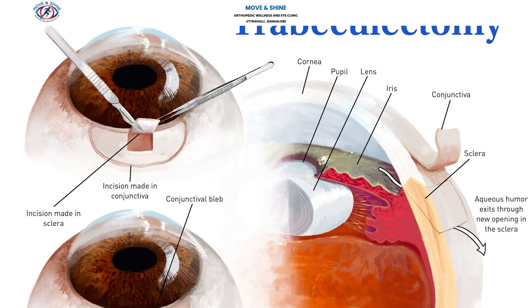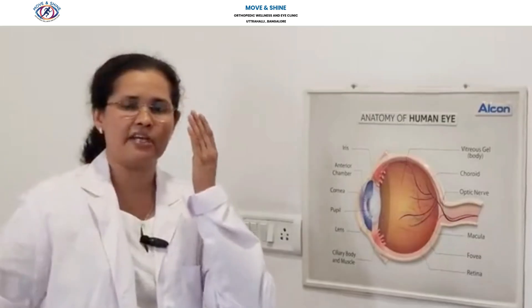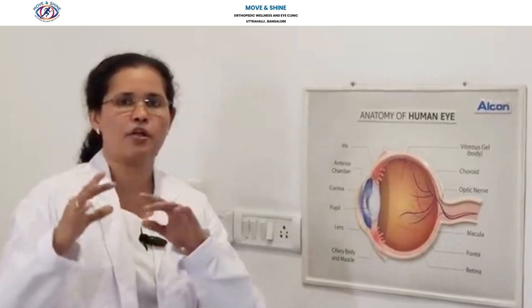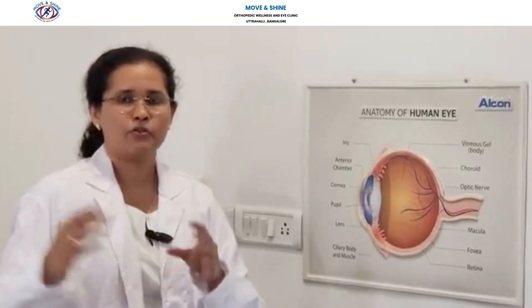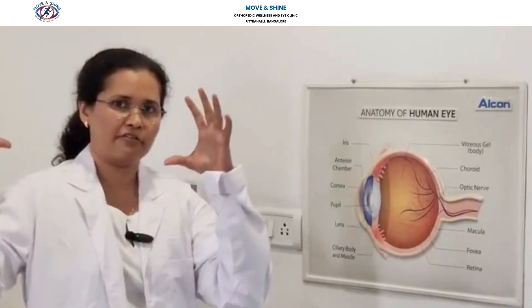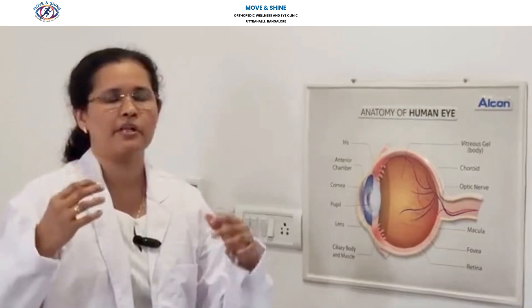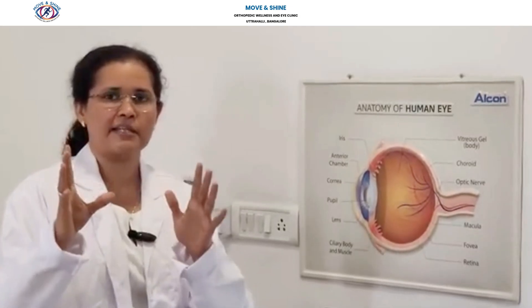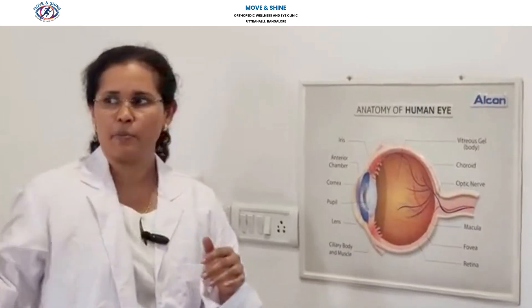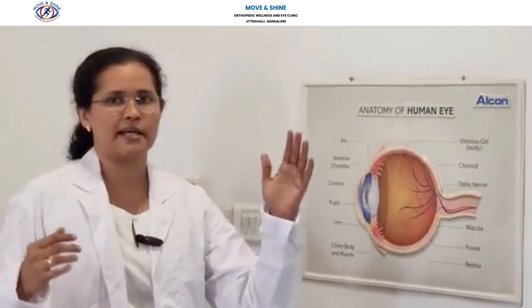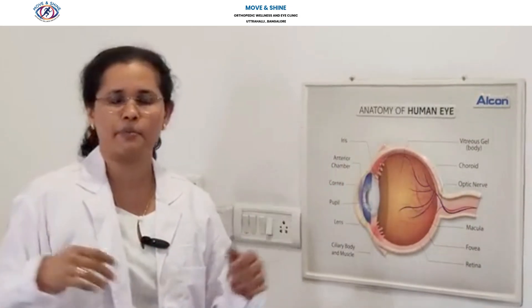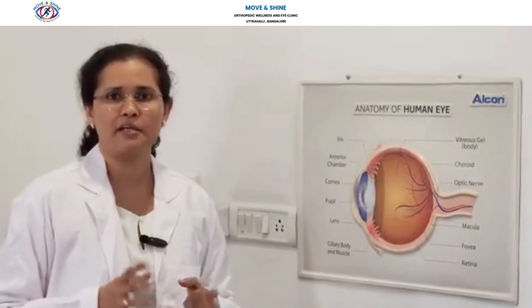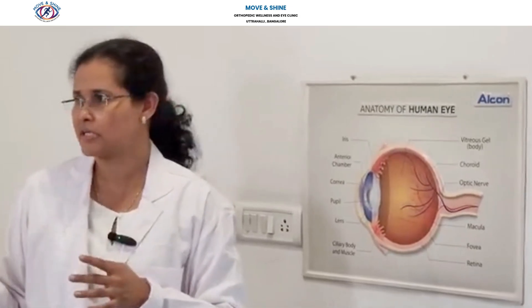In glaucoma, initially the side vision comes down. With one eye, how much area we are seeing — that is called the field of vision of that eye. Initially the field of vision comes down. For example, if I am having glaucoma and I am looking straight, I will be seeing things clearly, but if somebody comes from the side, I will miss that. But I will not realize it because I will just turn and see.